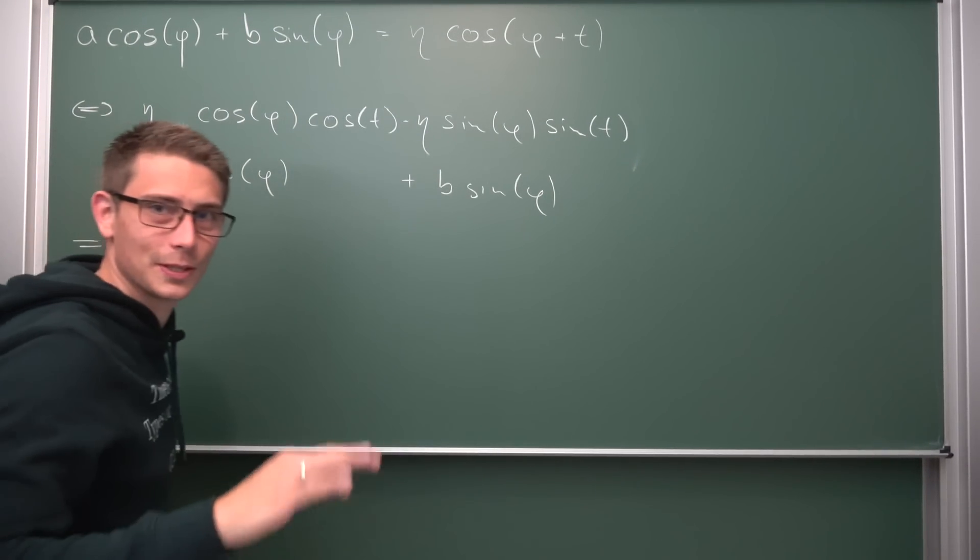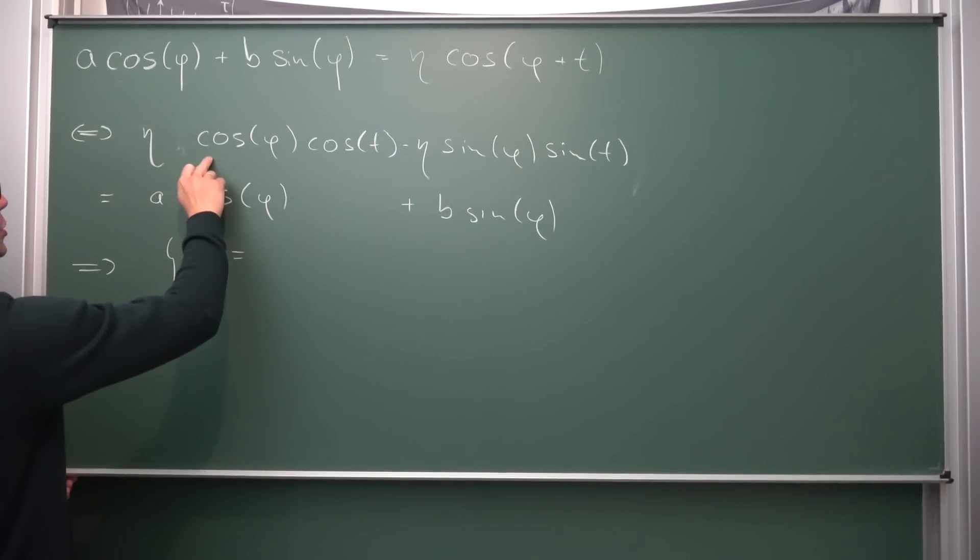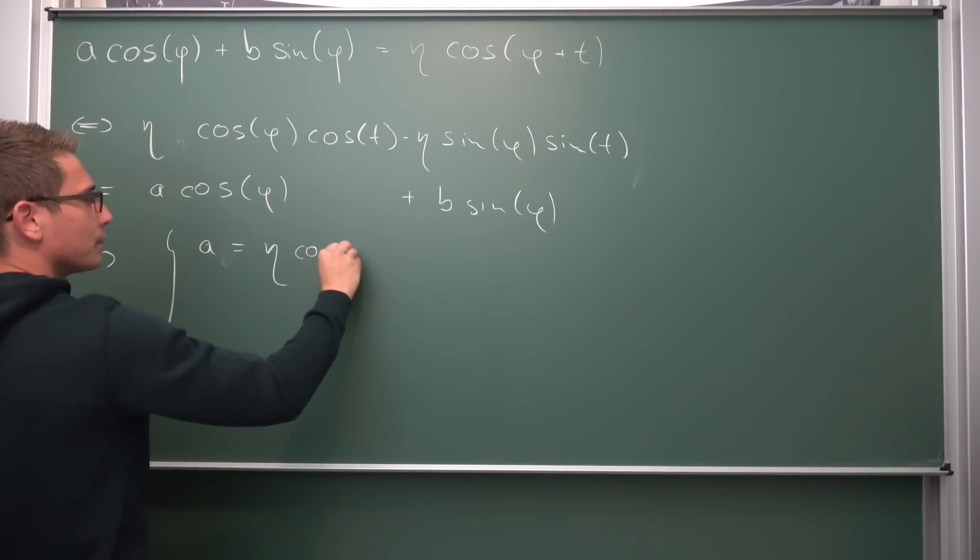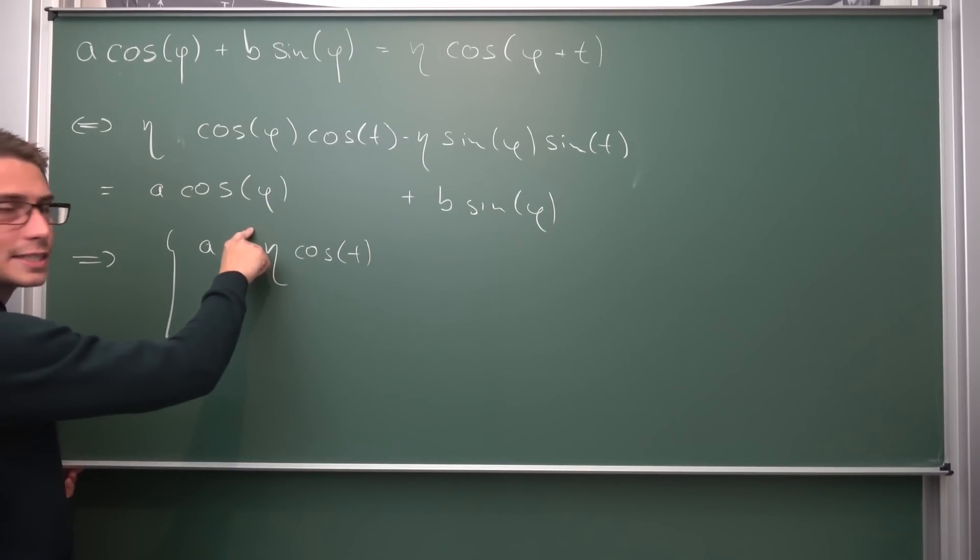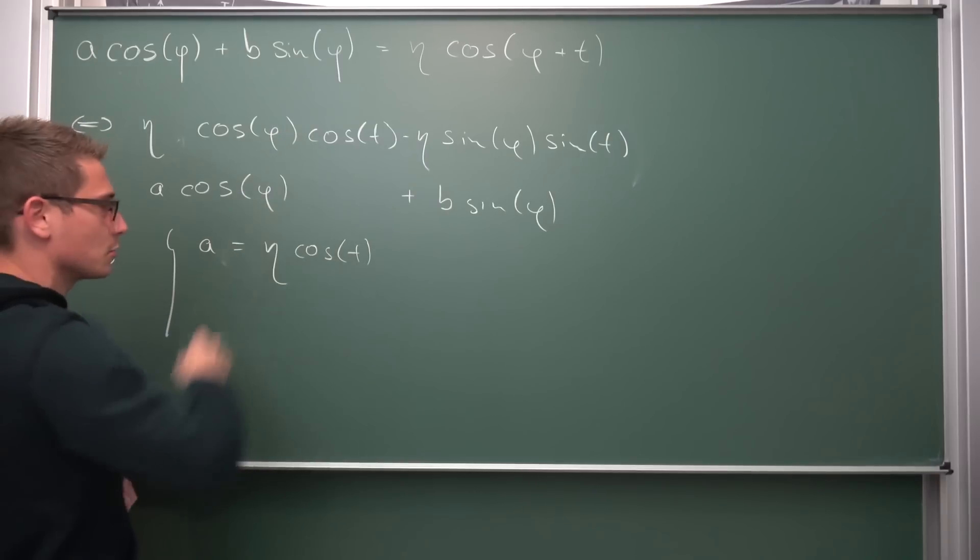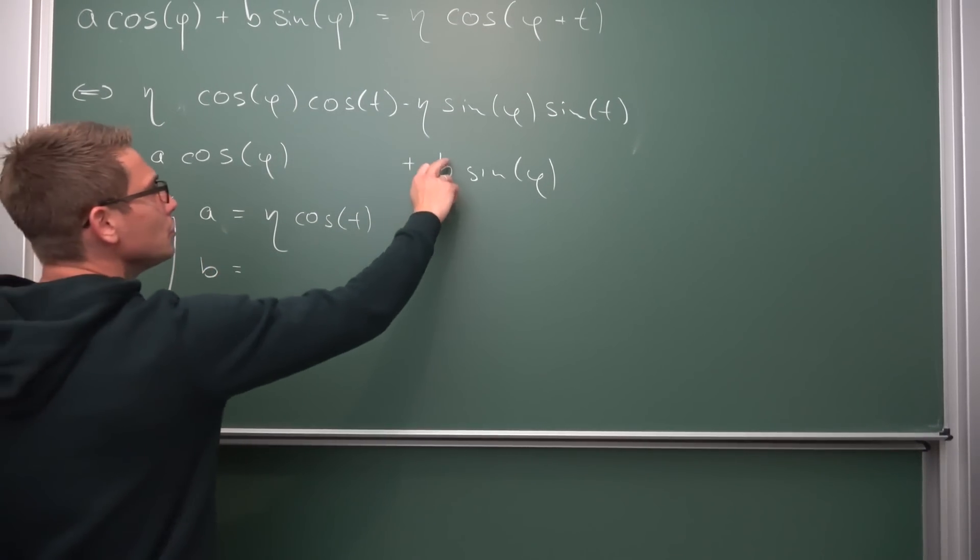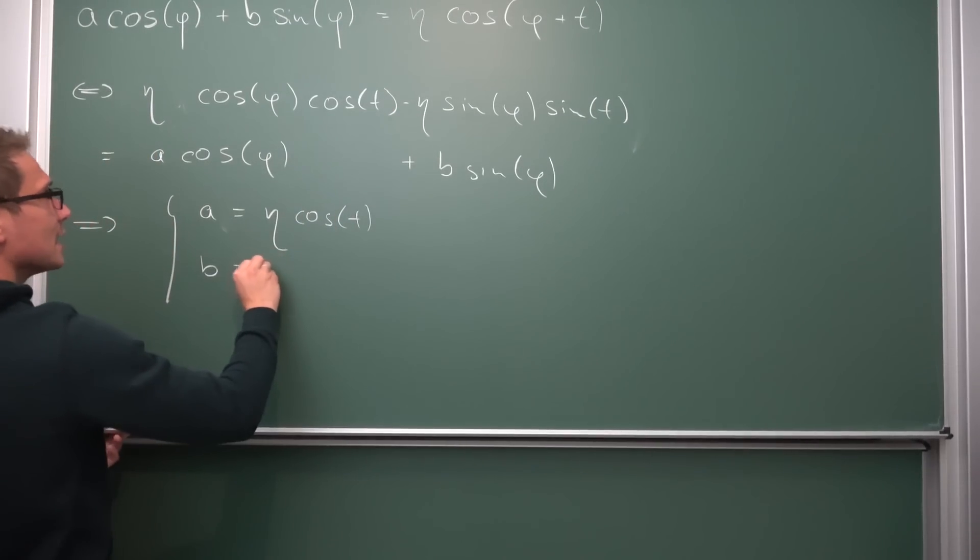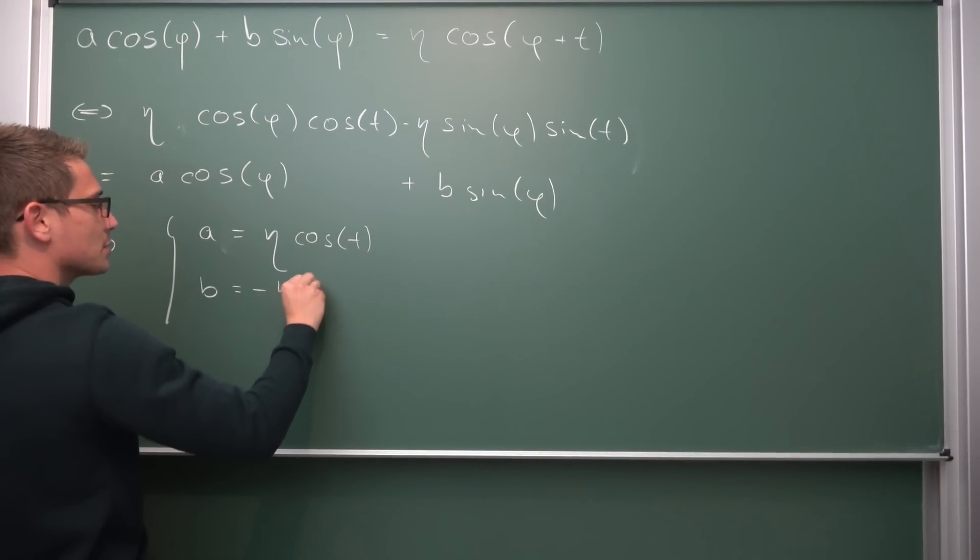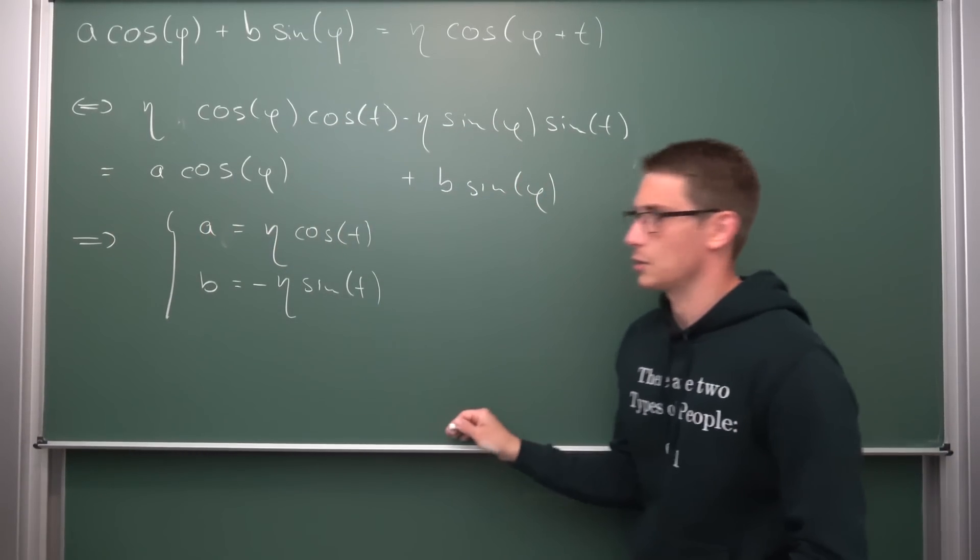And now we are going to equate these. What are the coefficients of the cosine of phi and sine of phi respectively? Well, on the one hand, we are going to get, this is supposed to be a curly bracket I'm terribly sorry, that a is equal to eta times the cosine of t. We are just going to compare these. I hope you can see this. Covering this up, we are going to be left with a being equal to eta times the cosine of t. And on the other hand, we are going to get that b is equal to, we get a negative sign in the front. Here we got a positive sign, but this time we get a negative sign, eta times the sine of t.